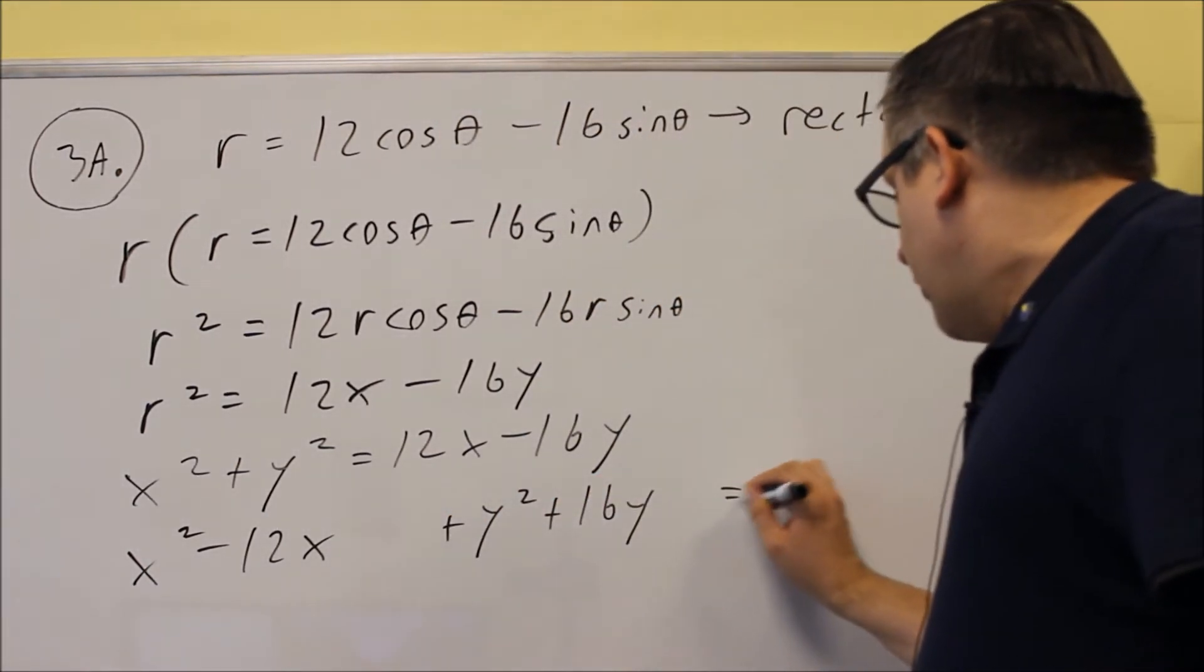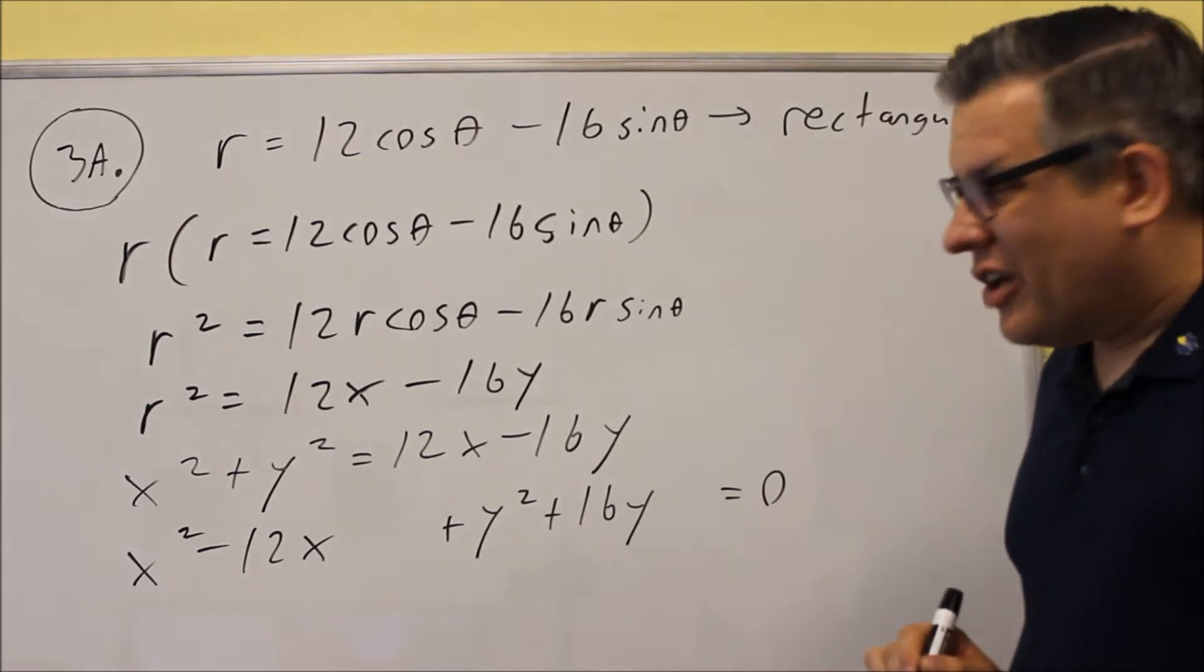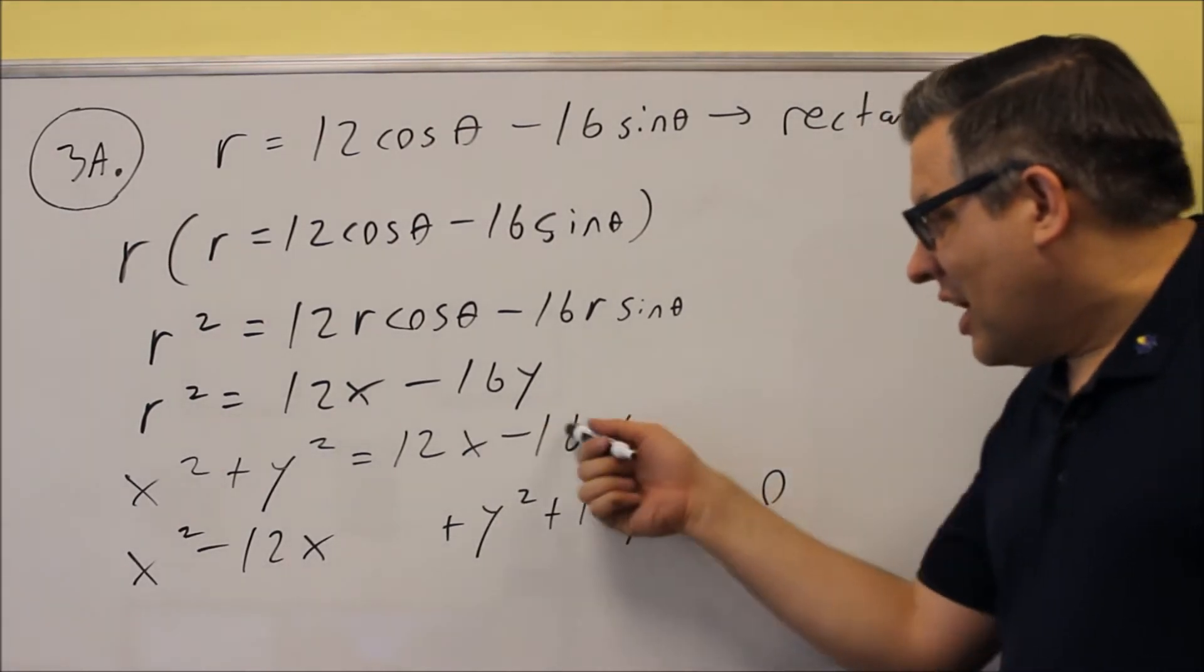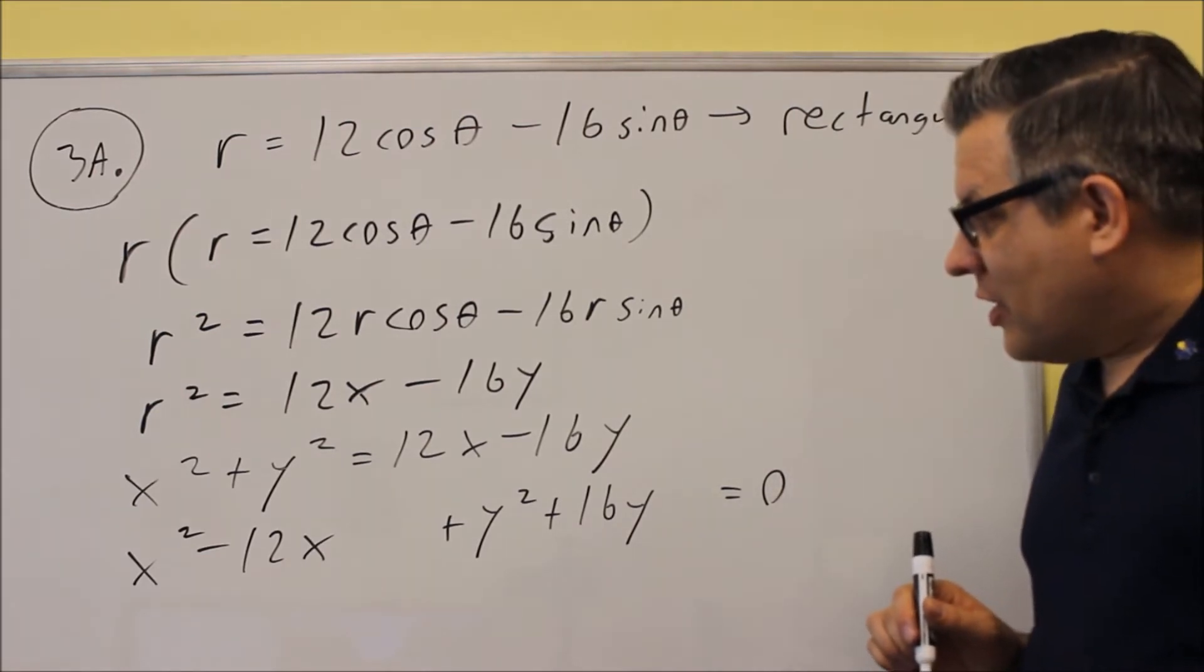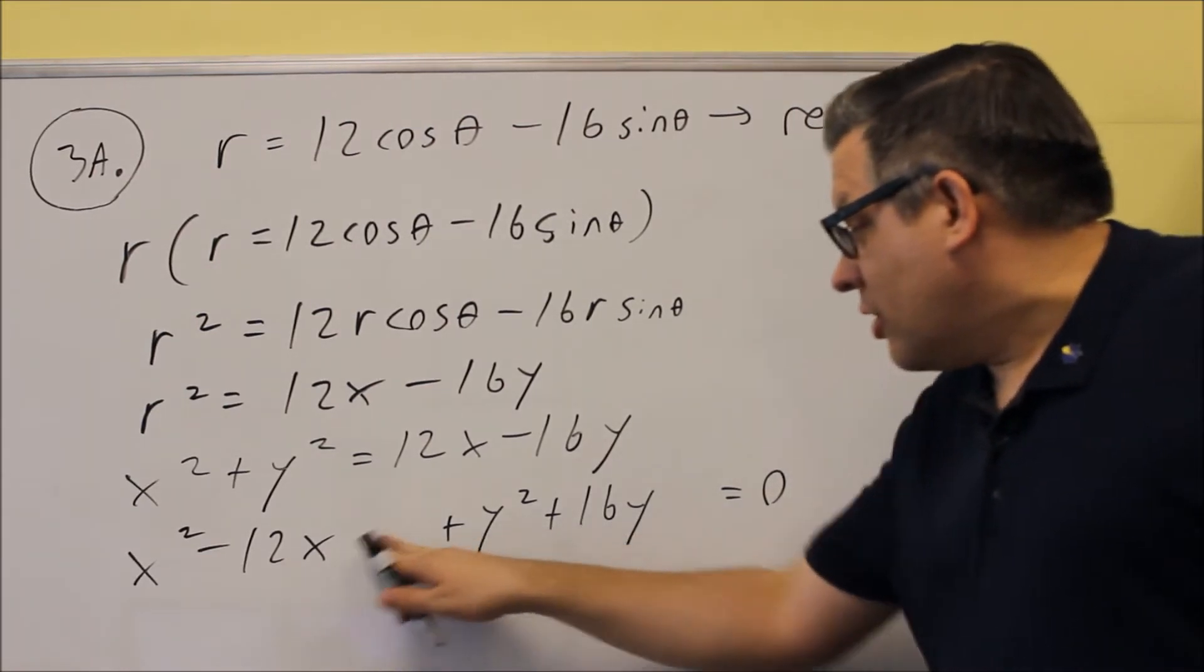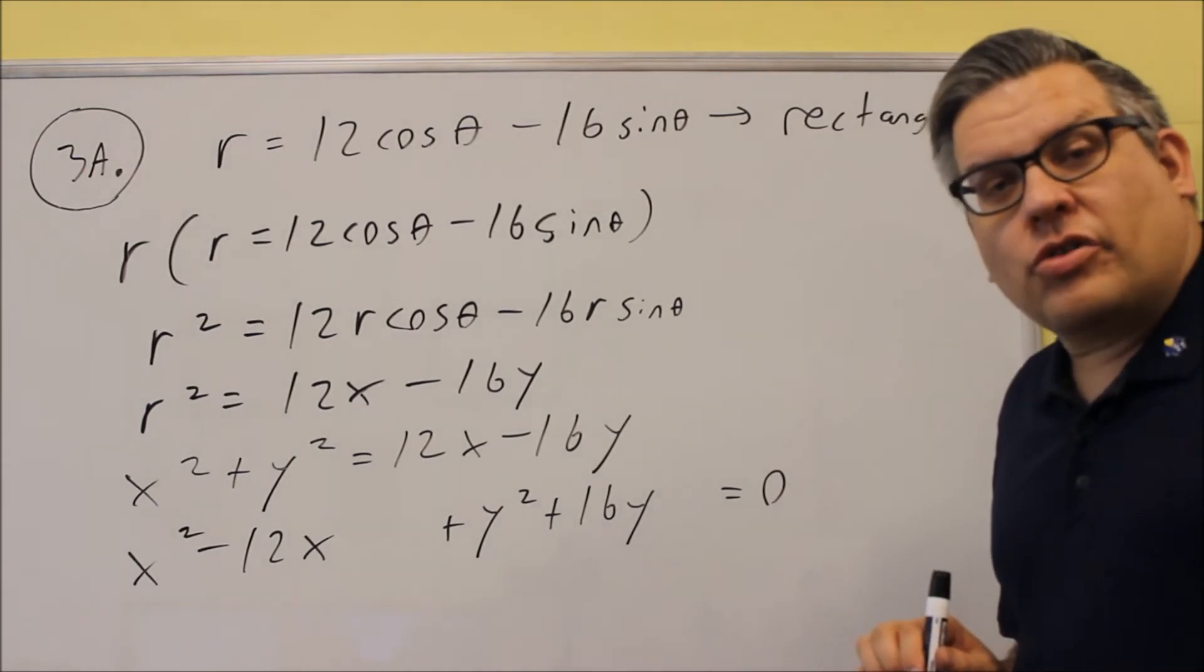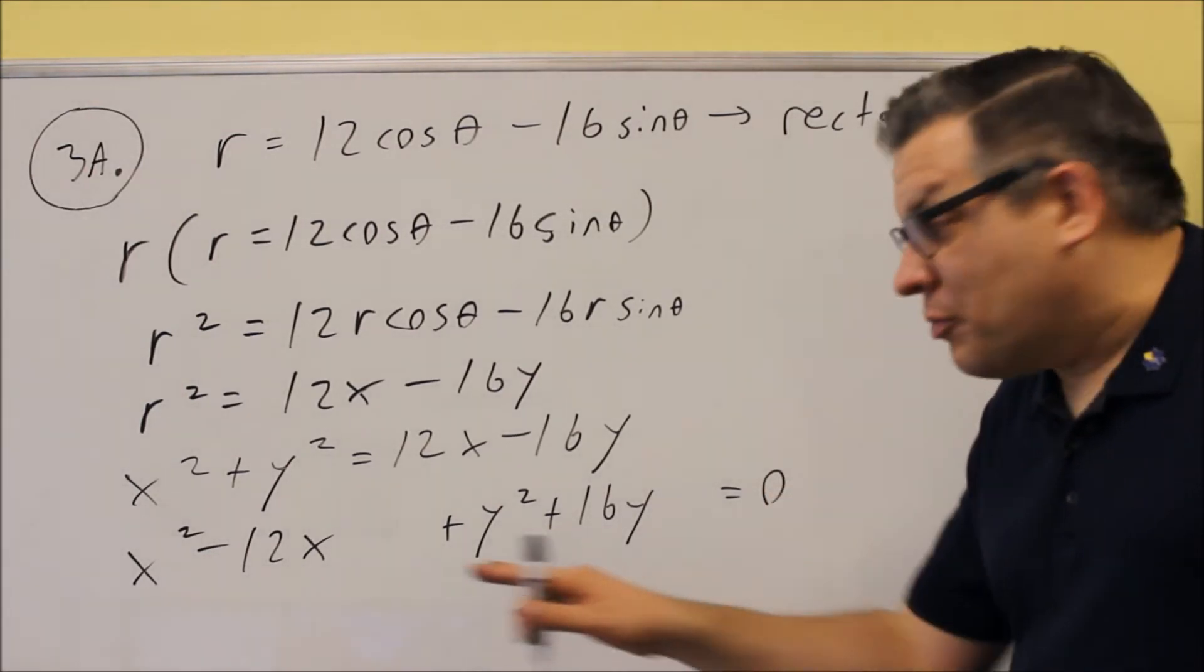So first, what we want to do is set it up like this. We're going to subtract the 12x and add the 16y, and so you get a zero on that side. Then you want to leave some spaces in here because we're going to do complete the square steps for both of those.